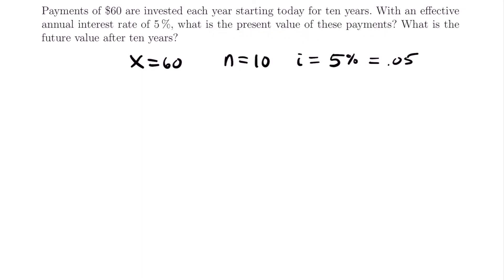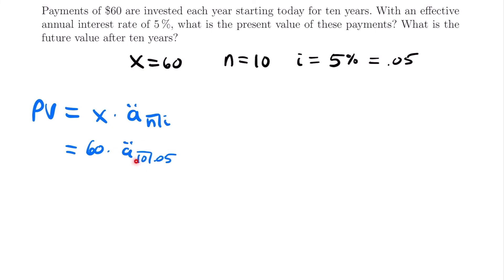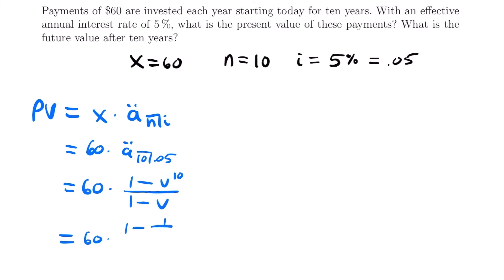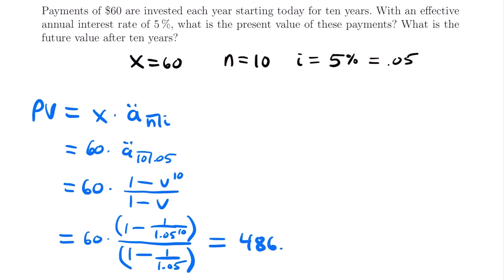For the present value, we use PV equals x times the annuity due notation, which gives us 60 times a-double-dot angle 10 at 0.05. Using our formula, this equals 60 times (1 minus v^10) divided by (1 minus v), where v equals 1/1.05. So it's 60 times (1 minus 1/1.05^10) divided by (1 minus 1/1.05). Plugging this into the calculator, the present value equals $486.47 — the present value of those 10 payments of $60.